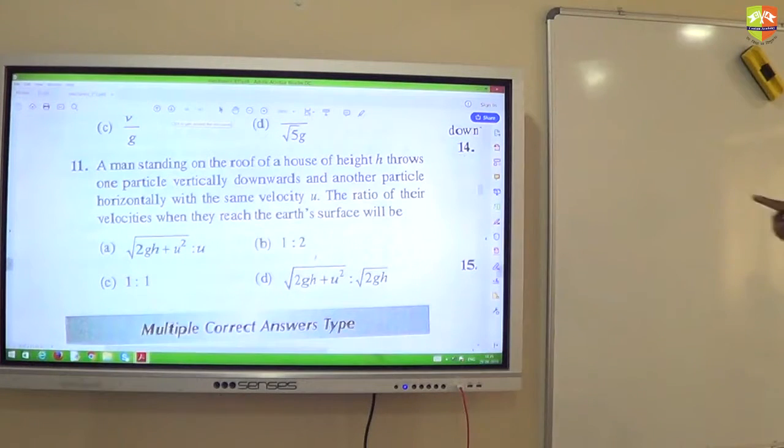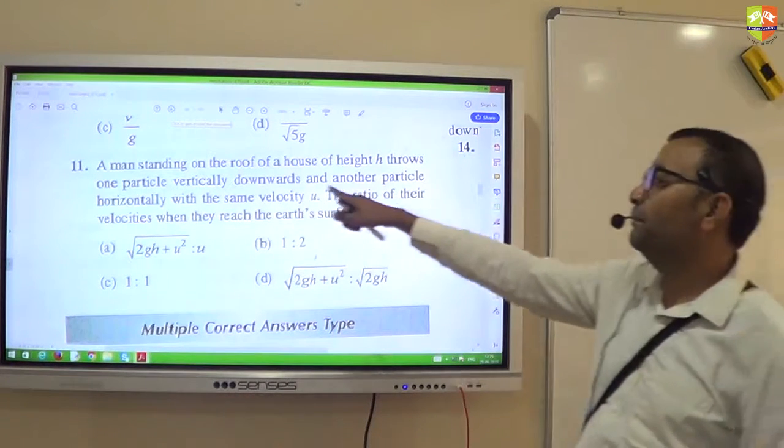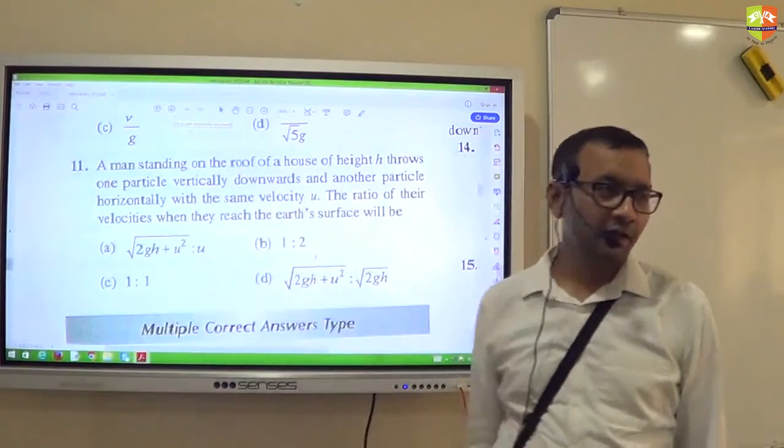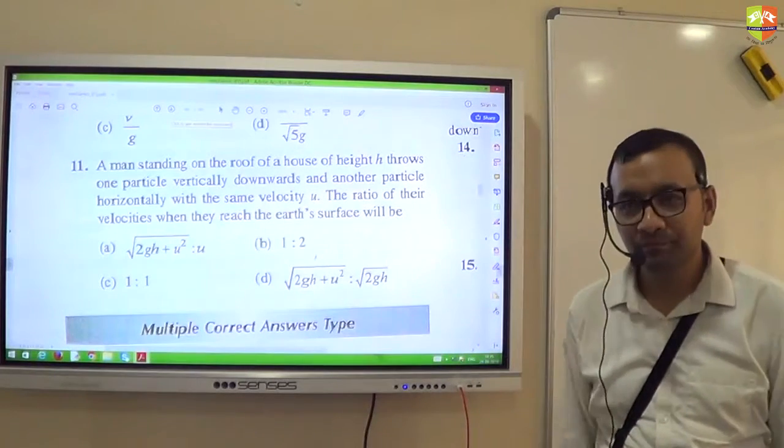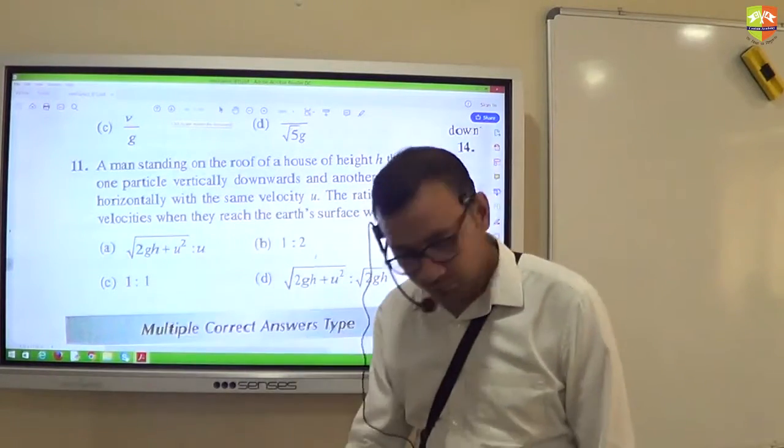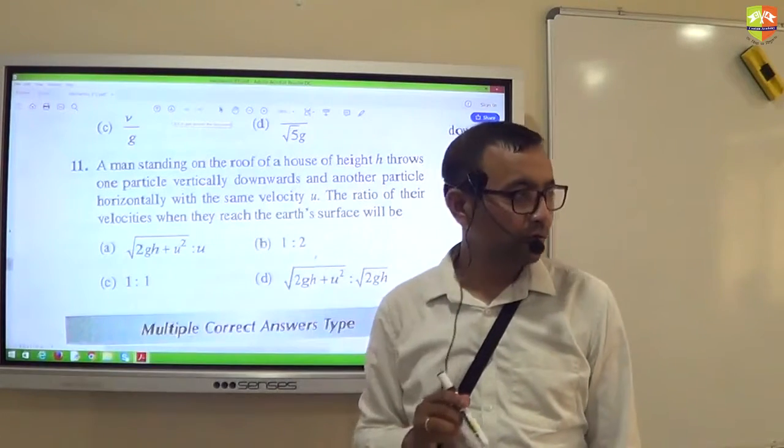First of all, if the other particle is thrown horizontally, then only it is 1 is to 1. It is thrown down. It is not horizontally thrown.